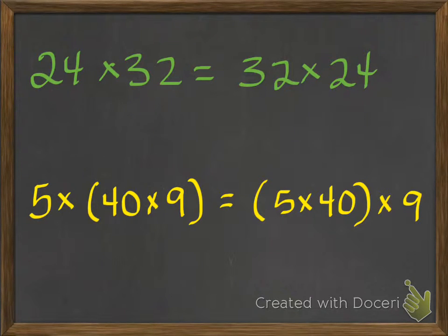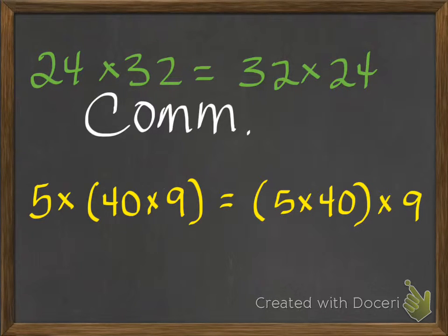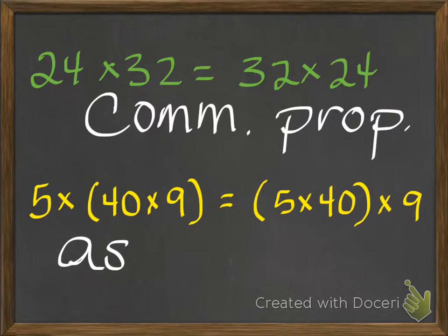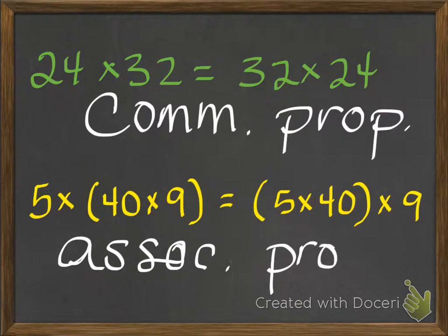Here are examples of the two different properties we've learned about. The one on the top says 24 times 32 equals 32 times 24 — which property is that? If you said the commutative property, you are correct. Below, we have 5 times the grouping (40 times 9) equals the grouping (5 times 40) times 9. Which property is that? If you said it is the associative property, you are correct.